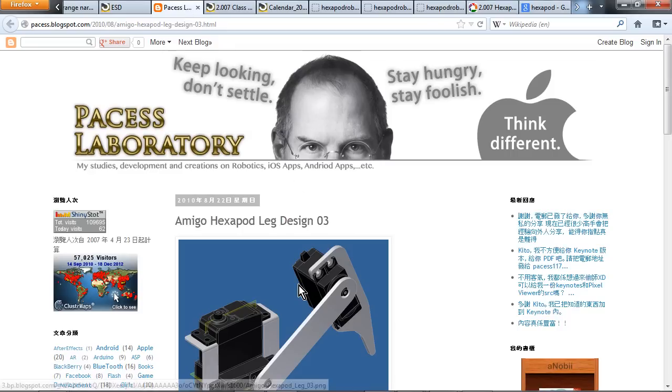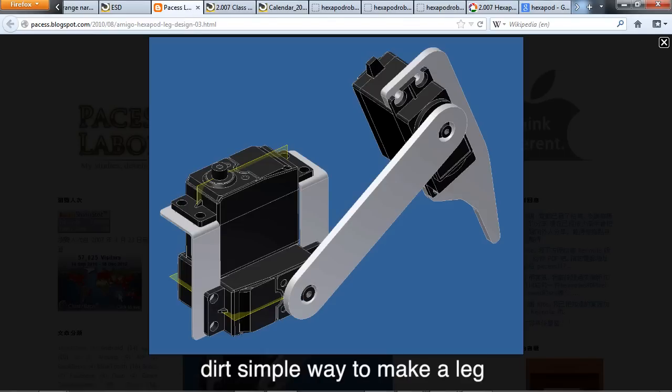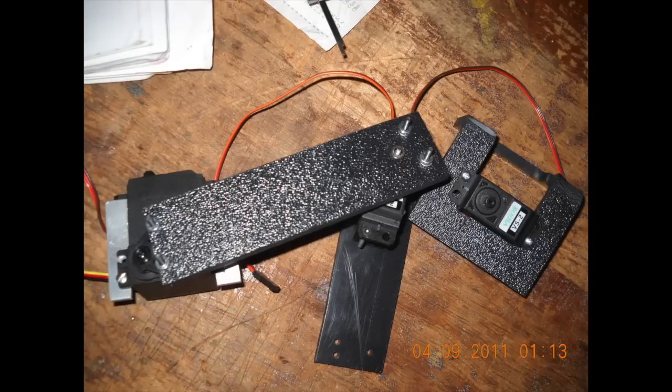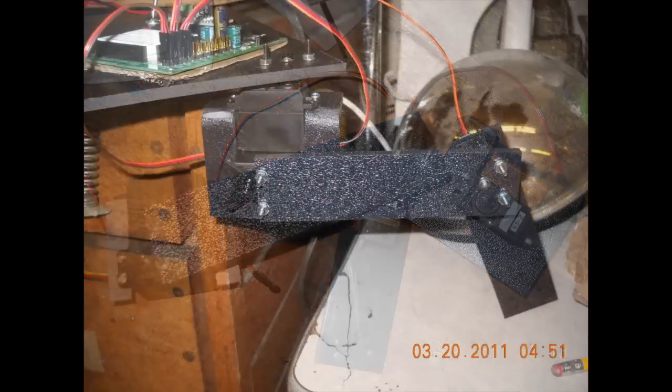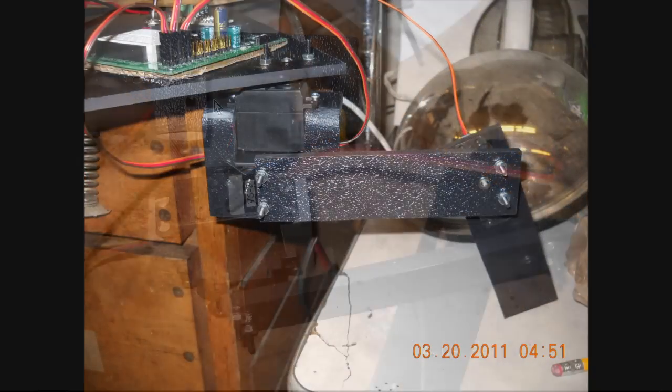Right around spring break, I built a prototype of a single leg based off of this CAD model I found online. This leg is made out of ABS plastic, and wow, machining plastic is like butter compared to machining aluminum.